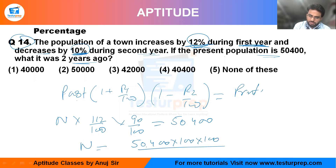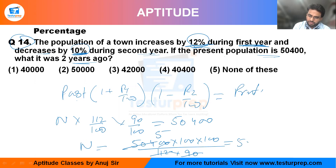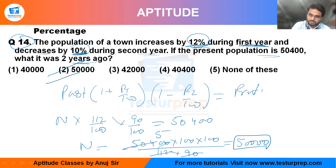You can solve and cancel out the values. You will get N = 50000. That means the answer is the second option.